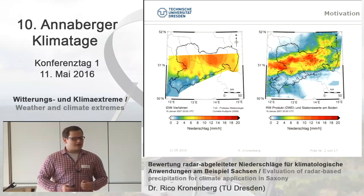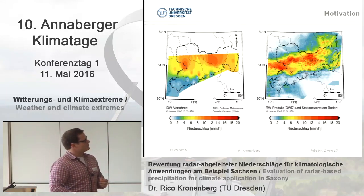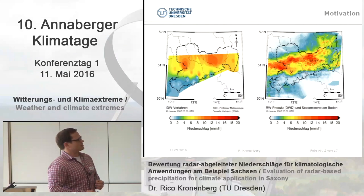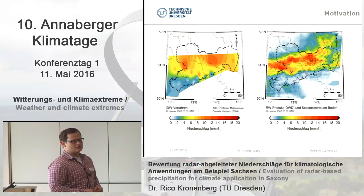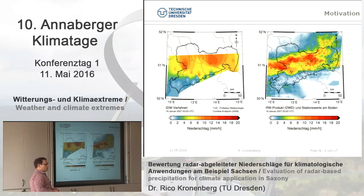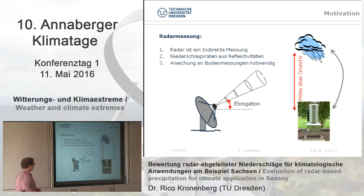This example shows the big advantage of radar measurement. On the left-hand side, you have the normal interpolation with a very simple spatial method on the basis of 40 stations in Saxony. The radar gives coverage of the whole area. In this area where we project the radar, the resolution is one kilometer. We don't need estimations to get any precipitation information, and we have the high temporal resolution that radar provides.